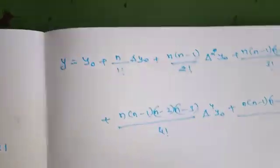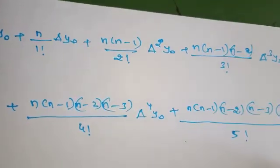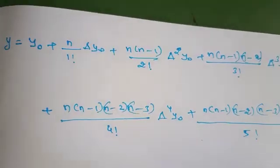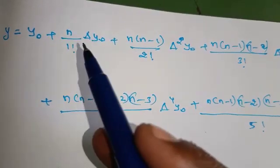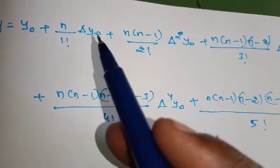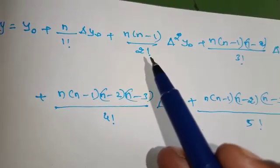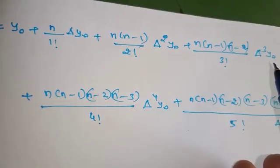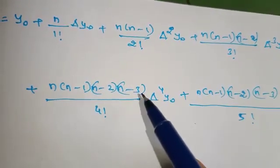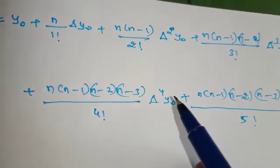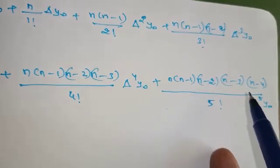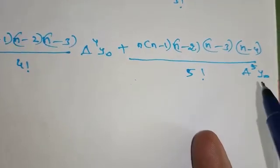Newton's forward interpolation formula: y = y₀ + (n/1!) × Δy₀ + n(n−1)/2! × Δ²y₀ + n(n−1)(n−2)/3! × Δ³y₀ + n(n−1)(n−2)(n−3)/4! × Δ⁴y₀ + n(n−1)(n−2)(n−3)(n−4)/5! × Δ⁵y₀.